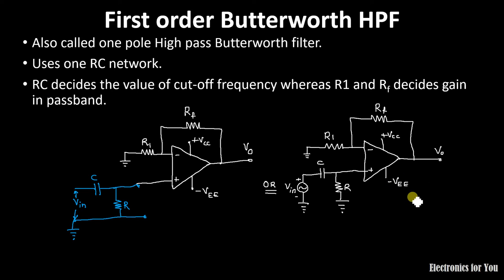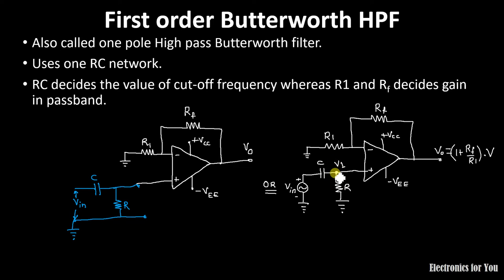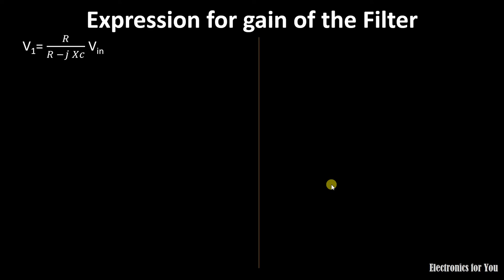The gain for this filter can be calculated by calculating the output voltage. The output voltage for a non-inverting amplifier is given by (1 + RF/R1) multiplied by the input voltage. The input voltage in this case is the output voltage of the passive filter section, so let this voltage be V1. We calculate V1 as the voltage across the resistance using the potential divider rule: V1 = R / (R − jXc) × Vin.